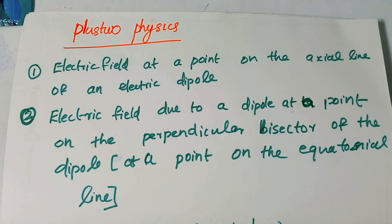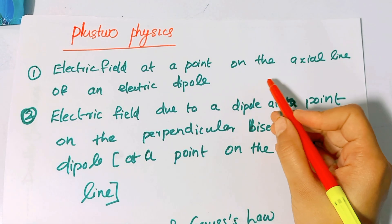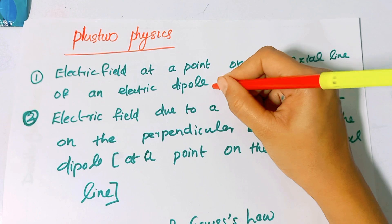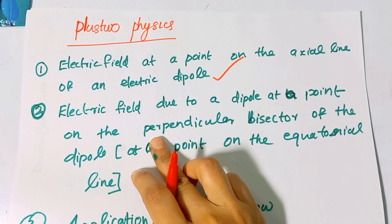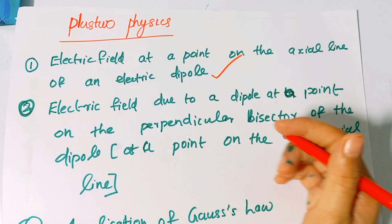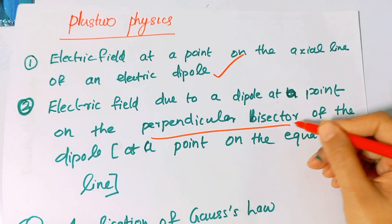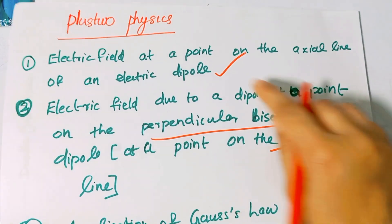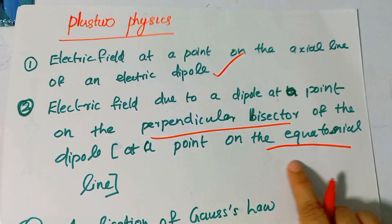The first derivations are from chapter 6, where we have the first 3 derivations: electric field at a point on the axial line of an electric dipole, and electric field due to a dipole at a point on the perpendicular bisector.